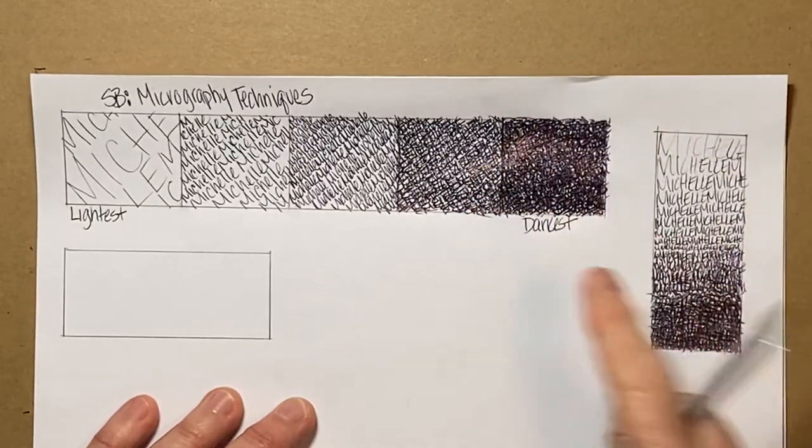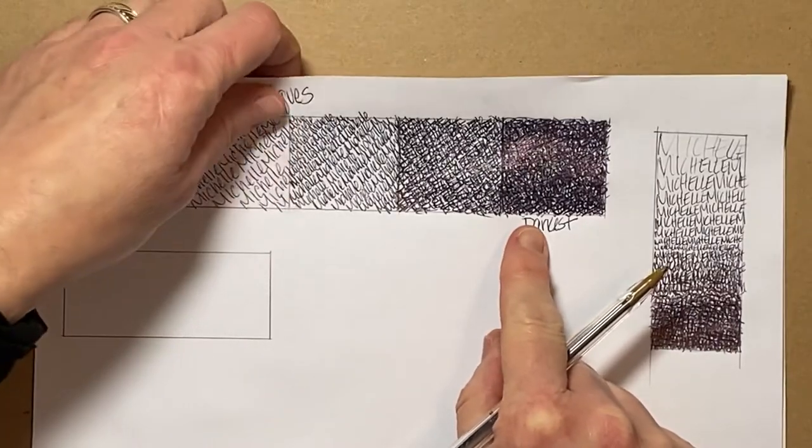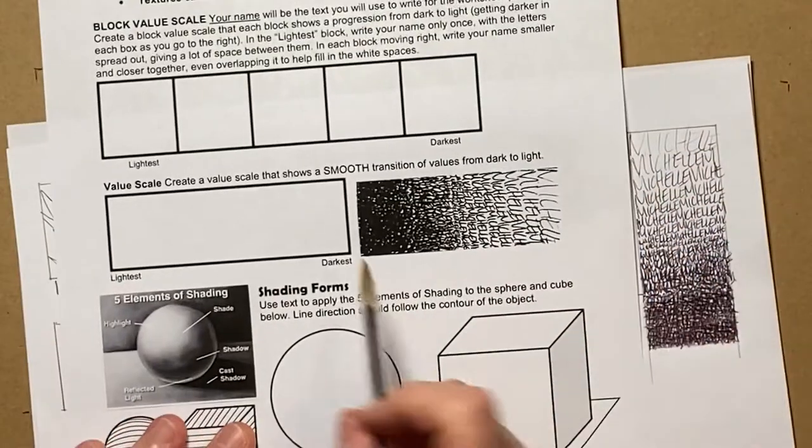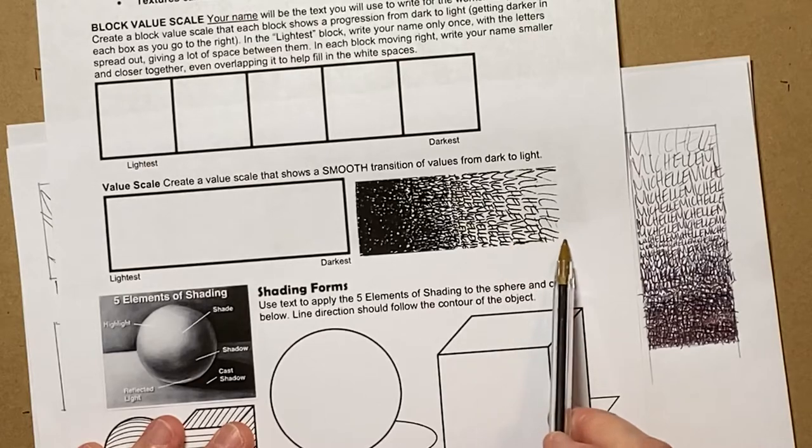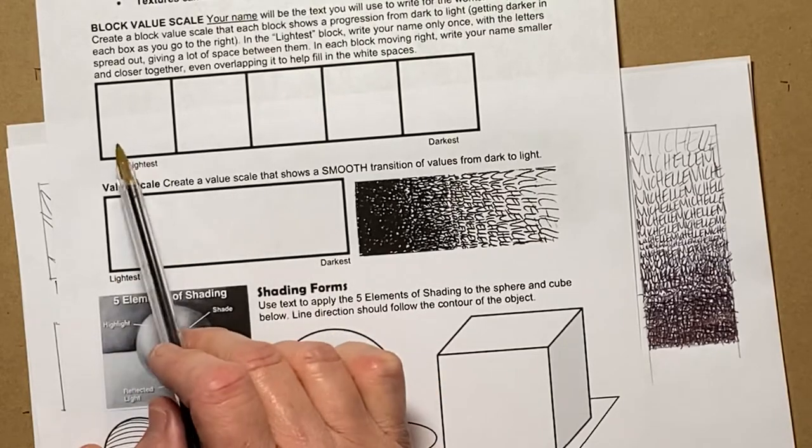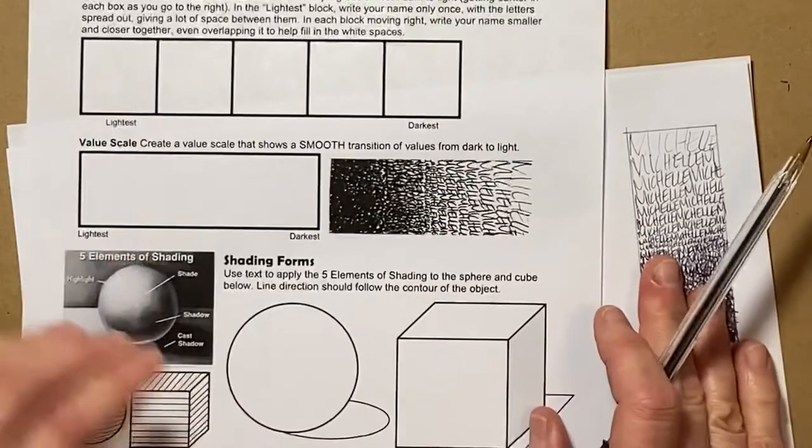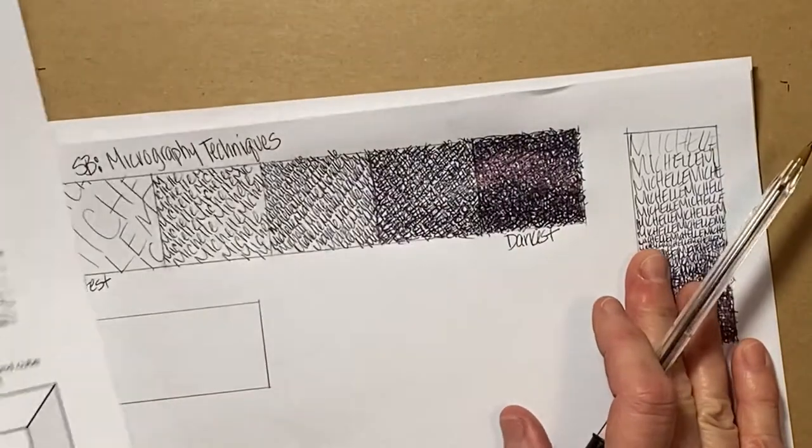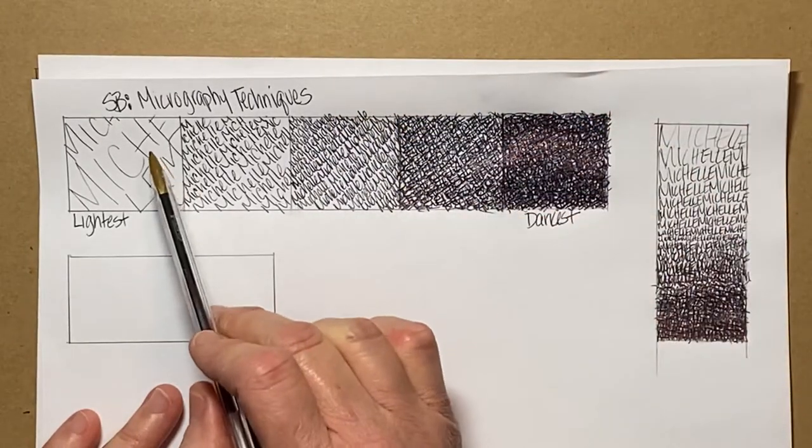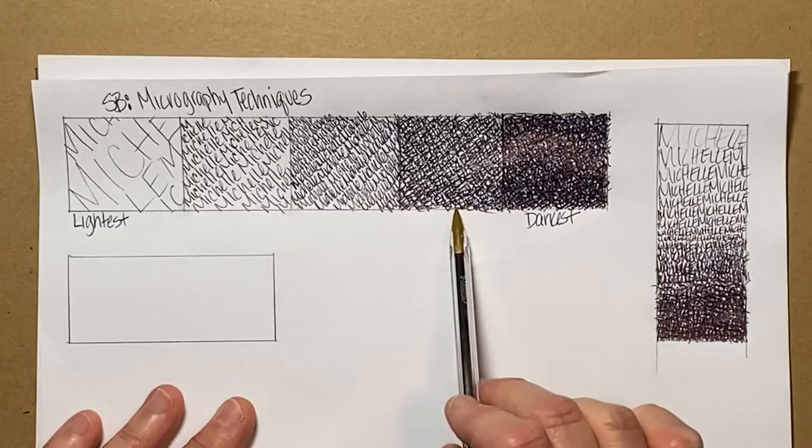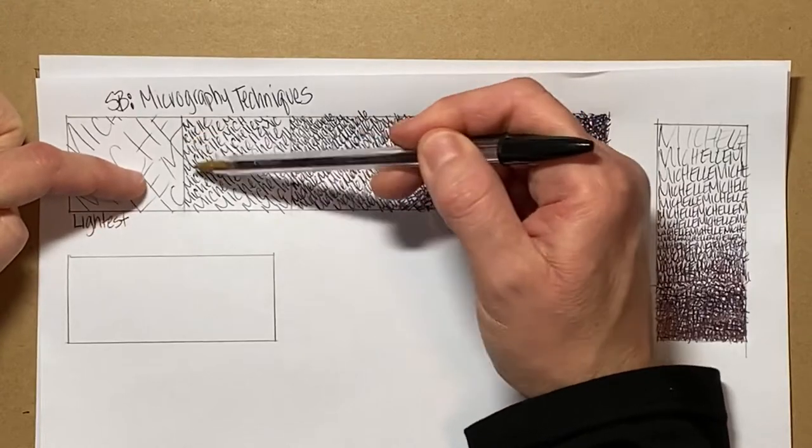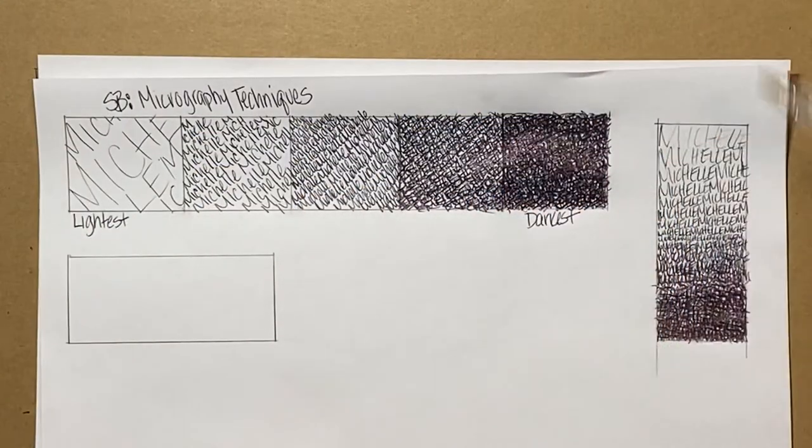For the value scale, what our goal is, is to have a nice transition of values like as shown here, and we want to do it from lightest to darkest. So basically you're doing this, but being it with a block scale, there is an abrupt change in the values. It goes from light to light medium, medium dark medium, and dark. What we want to have happen is we want these in between areas to kind of blur and be a little bit more of a seamless transition.